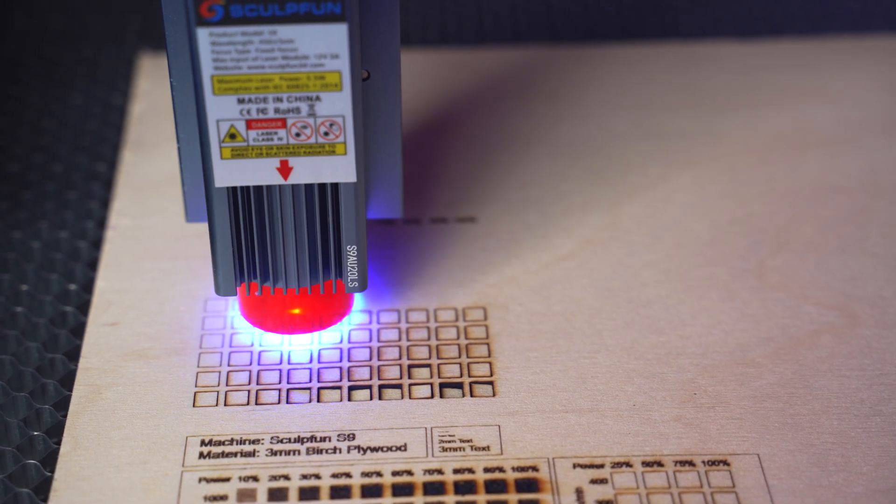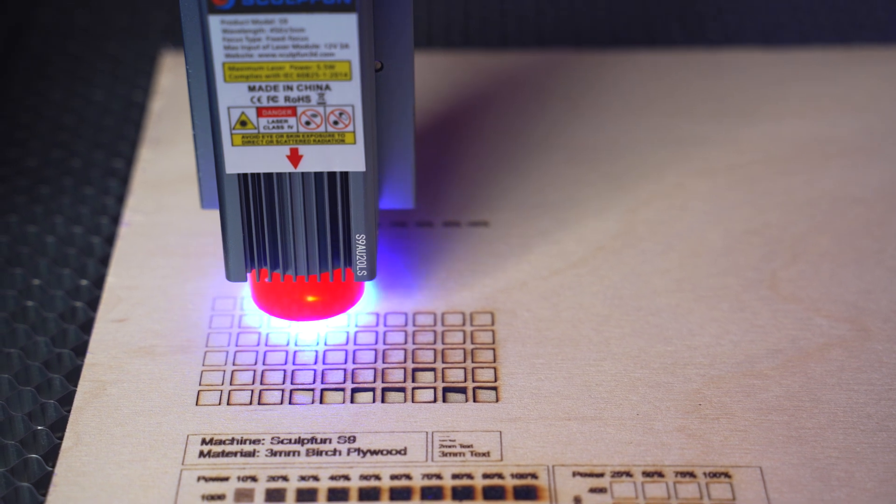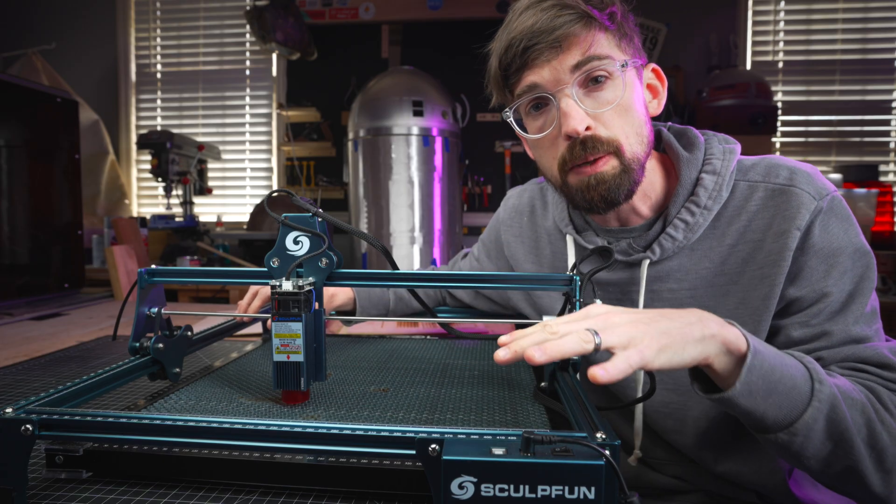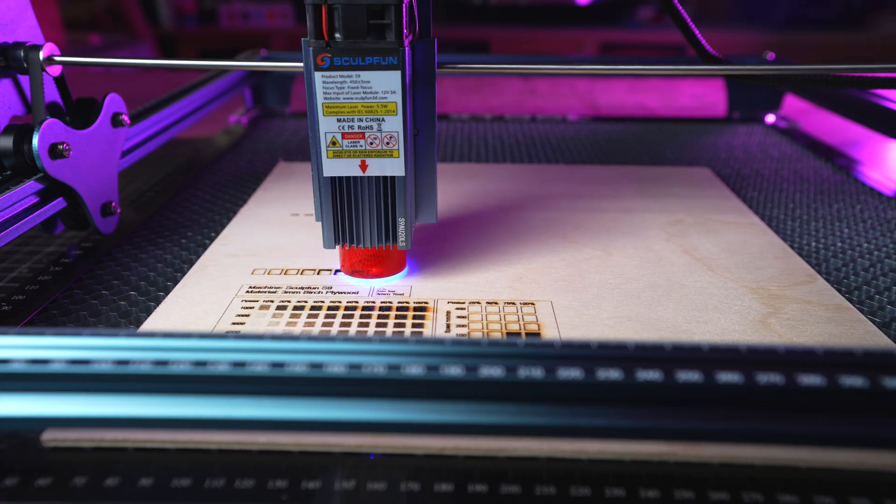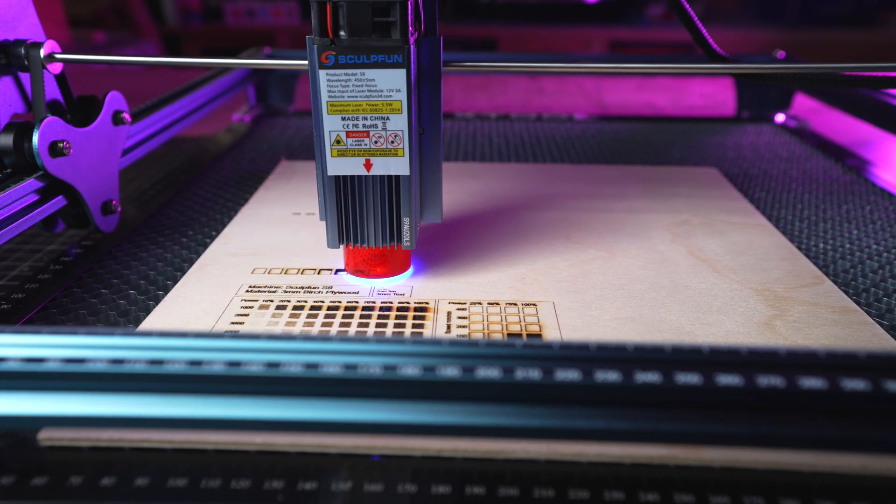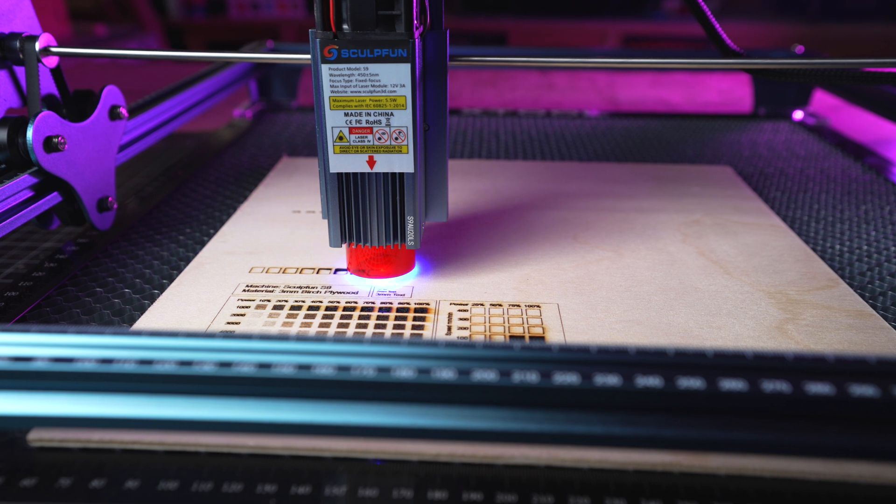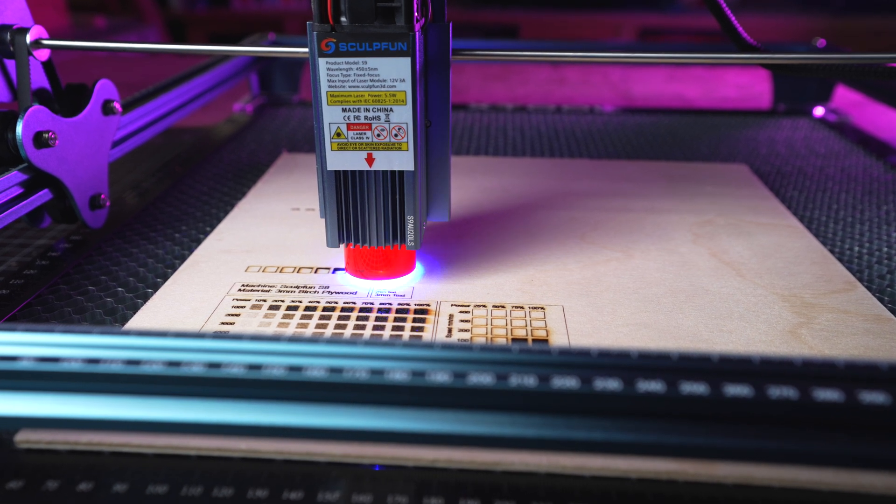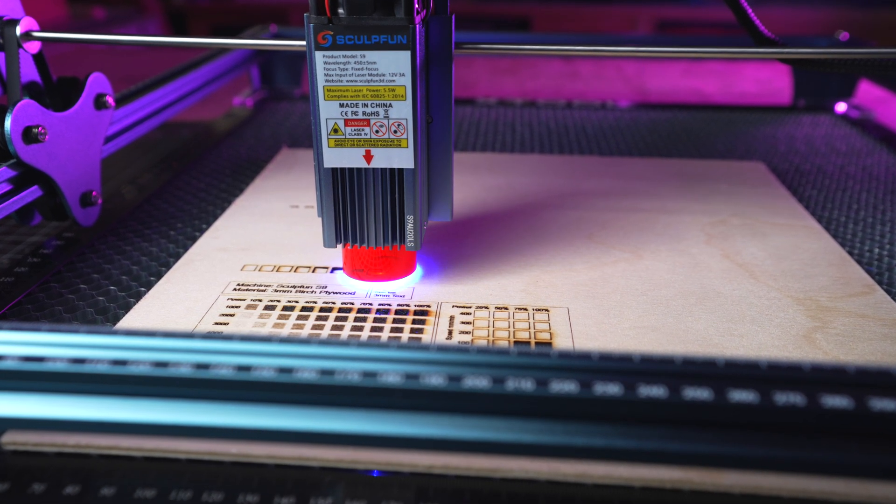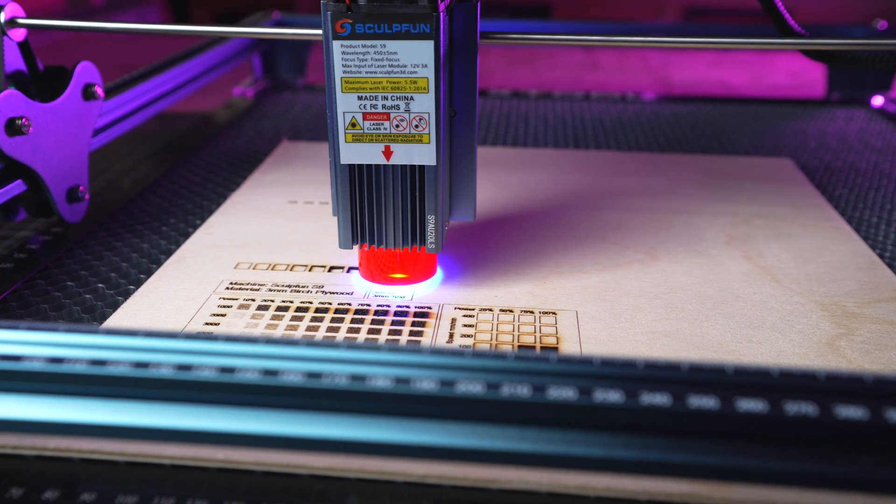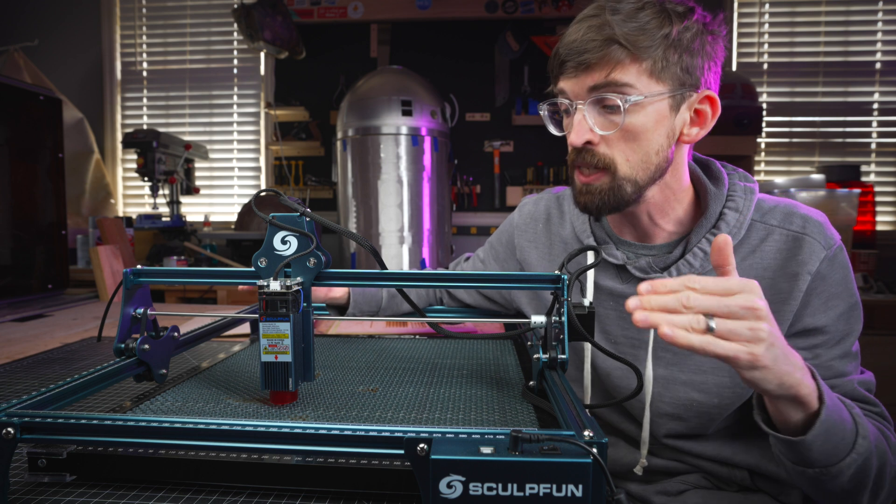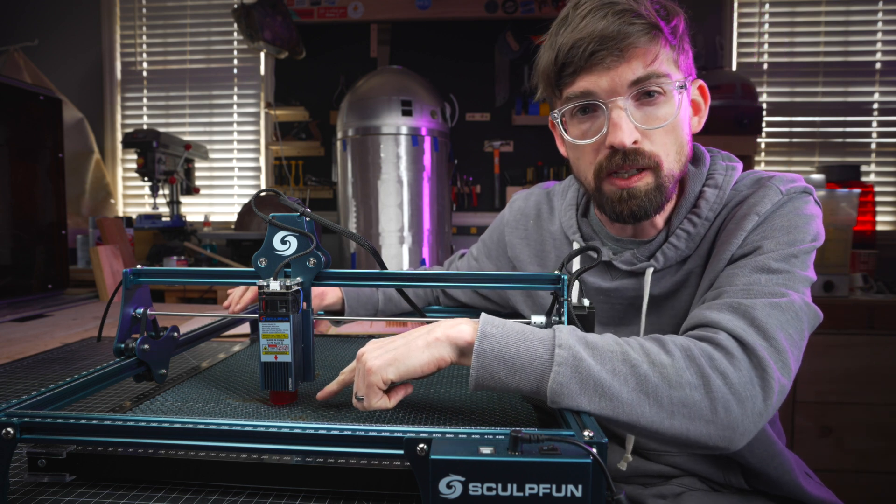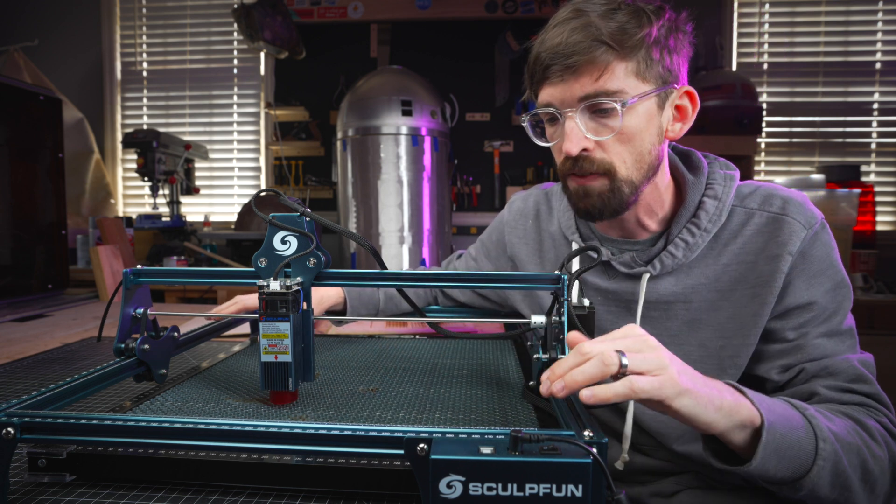A 5.5 watt laser module is still really nice. You're going to be able to engrave, you're going to be able to cut thinner material. It's a great one to start out with. One thing that's becoming pretty common is some type of filter that's going to be at the bottom of the laser to help protect you from some of the nasty light that's coming off. This does a pretty good job of blocking most of it. But like with any of these machines, make sure you're always wearing safety glasses, and they're going to provide you some that will block out the light that is coming so it's not going to harm your eyes.